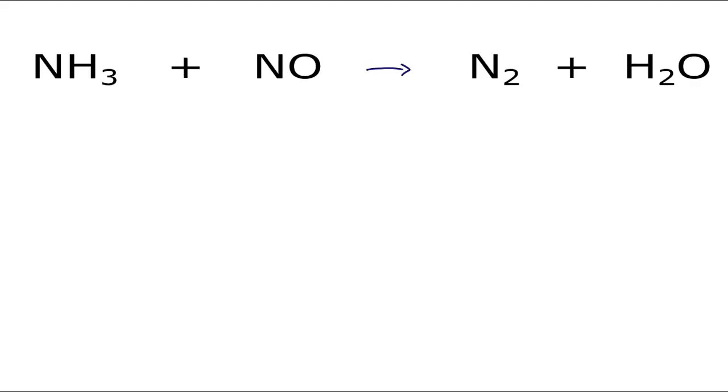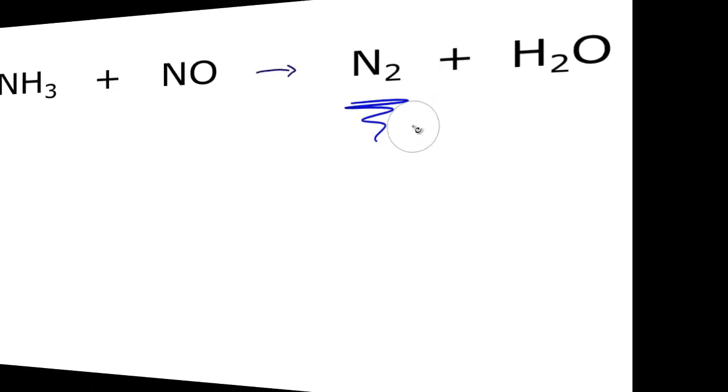This is actually a bit of a tough equation. NH3 plus NO yields N2 plus H2O. Whenever I have something like N2 or O2, I like to leave that until last. That makes things easier quite often. So let's see how this works out.